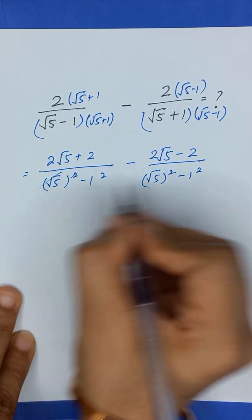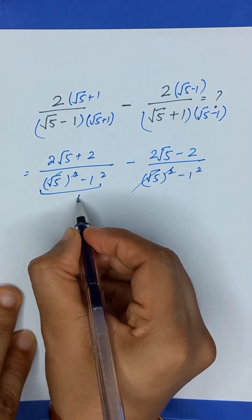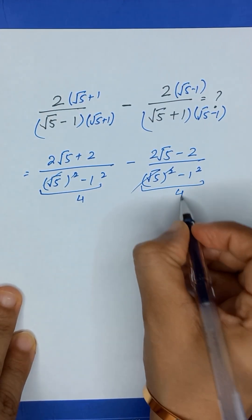So the square root will be cancelled out. It will become 5 minus 1, which will be equal to 4. Similarly, it will also be equal to 4.